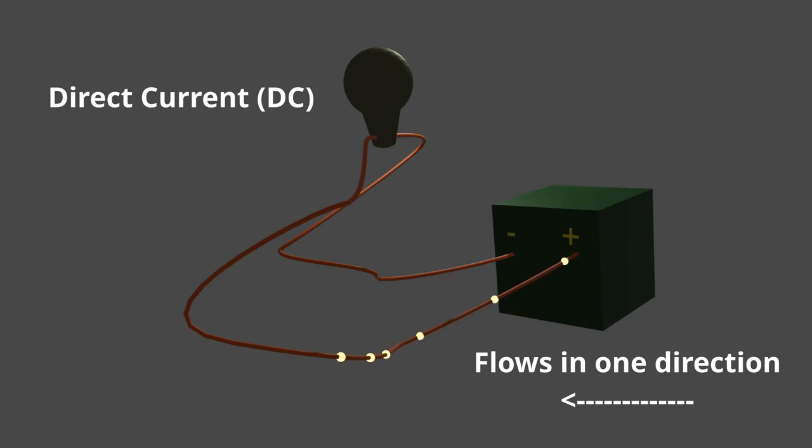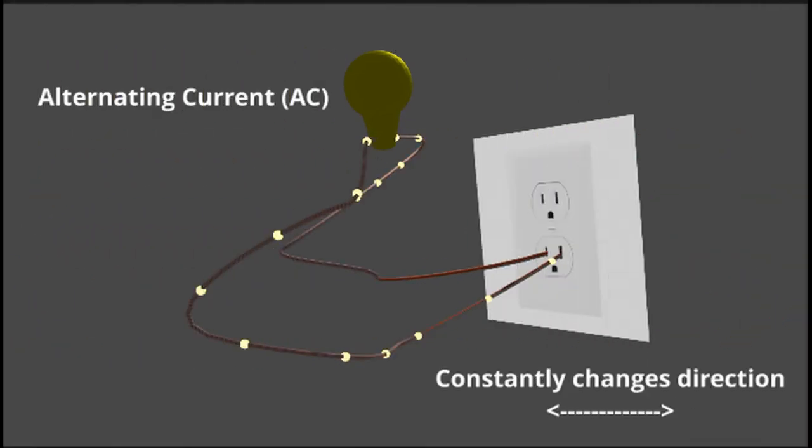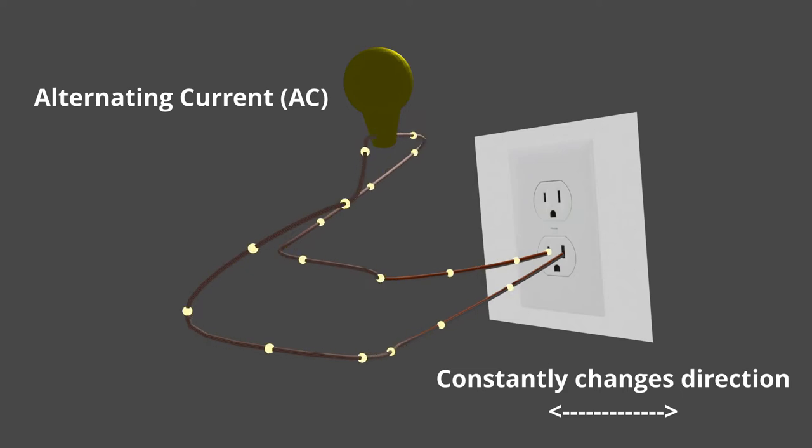The most common example of DC current is the flow from a battery from one terminal to another. In contrast, alternating current is what we see coming from our wall outlet. AC current in the United States changes direction about 60 times a second.